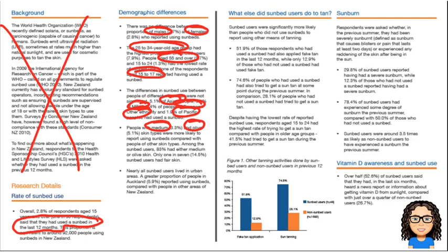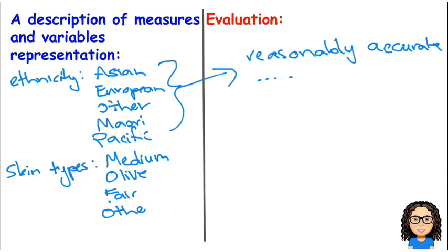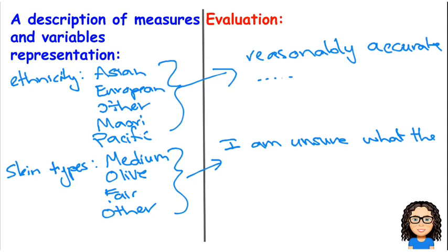Then we're told about people with medium, olive, fair, and other skin types — so they've looked at different skin types, which will be another variable. My personal thought is that I'm okay understanding what 'fair' type would be, but I'm not quite sure what the difference between medium and olive skin types is. I am unsure what the difference between medium and olive skin type is, for example.